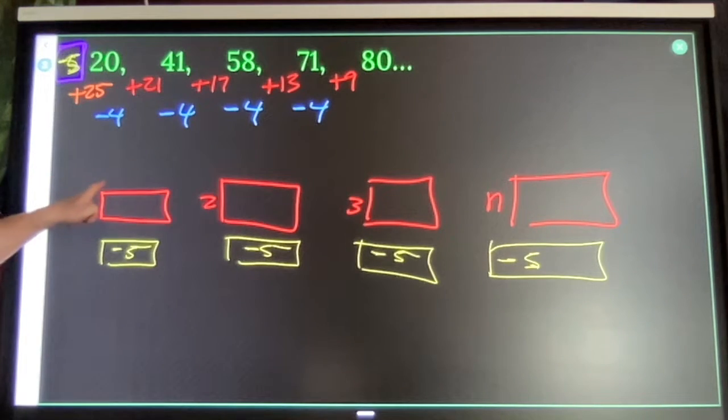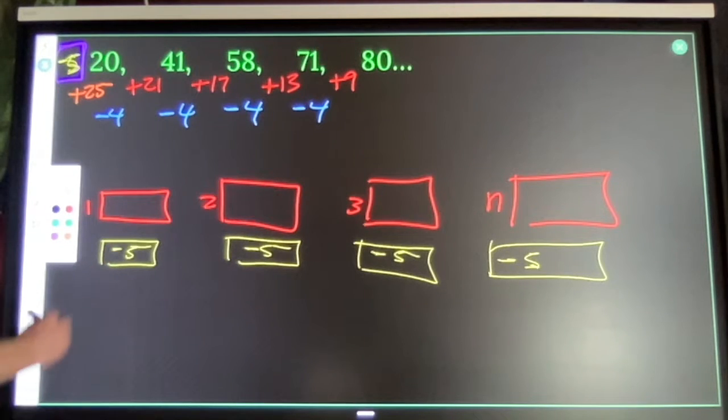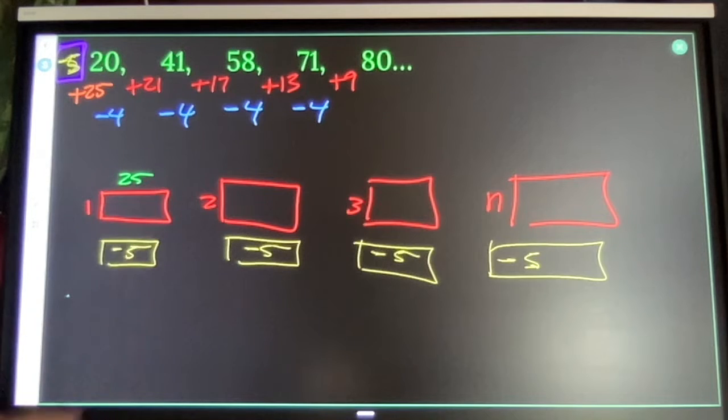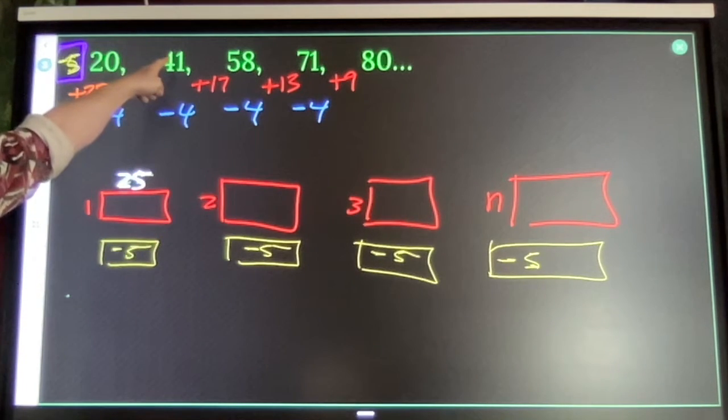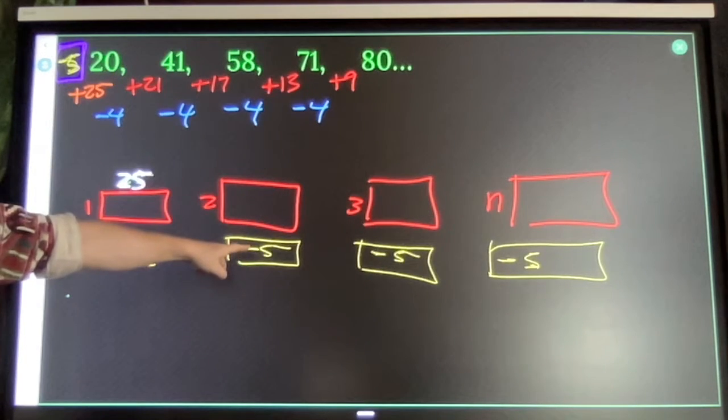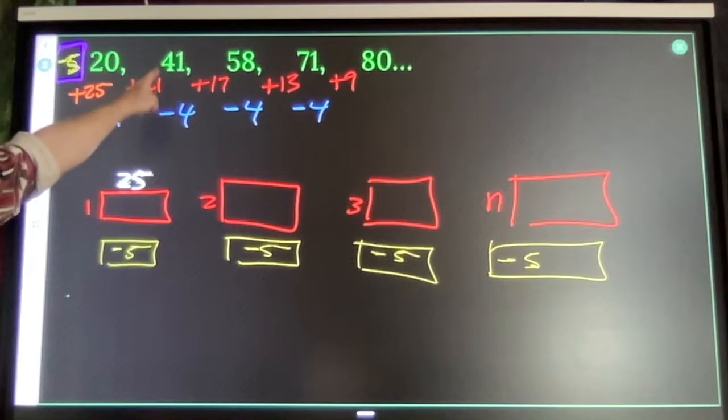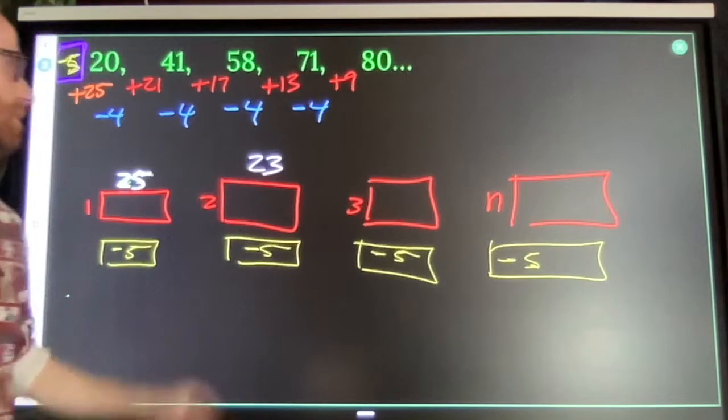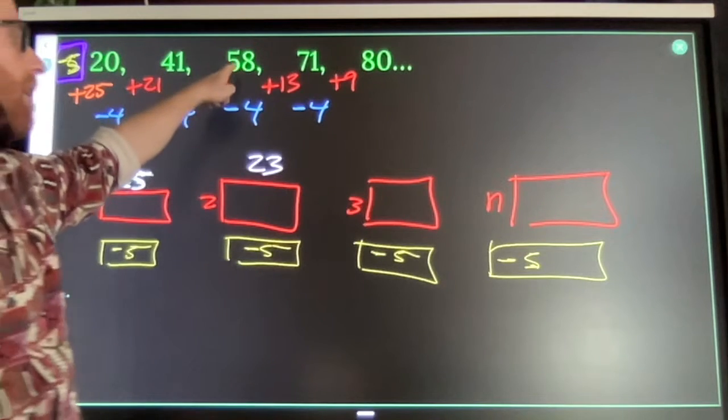What do I need my lengths to be so that my first number is 20? I'm going to need my length to be 25. 1 by 25 minus 5 gives me that 20. 2 by 23 will give me 46 minus 5 is 41. So, 2 by 23 will give me 46 minus 5 is 41.